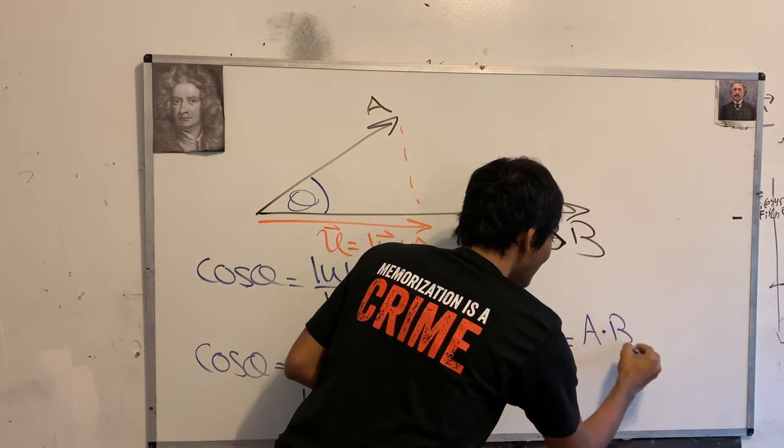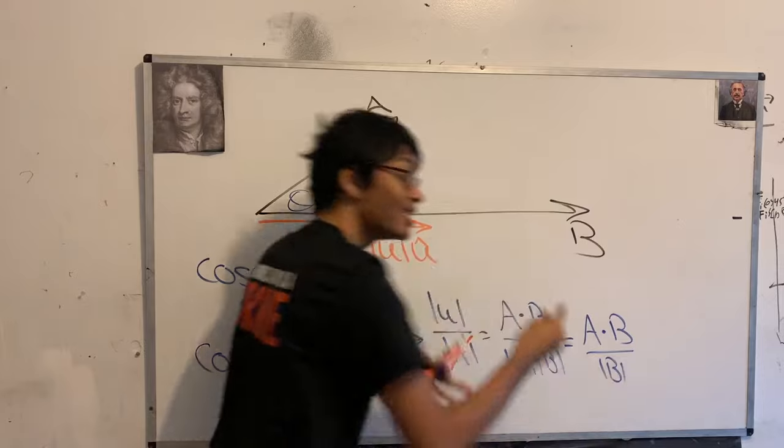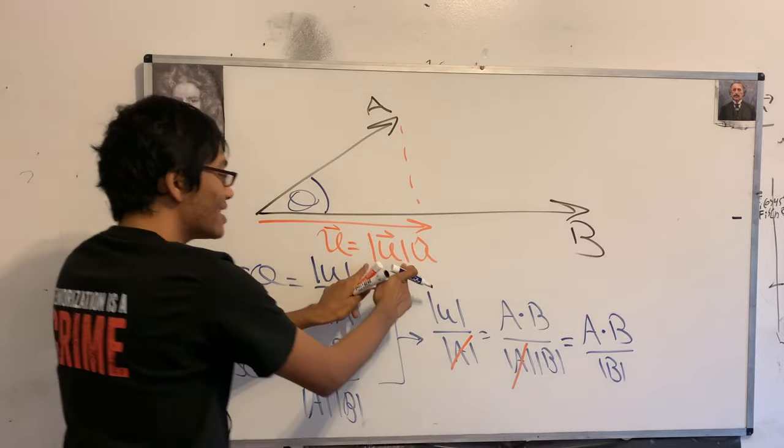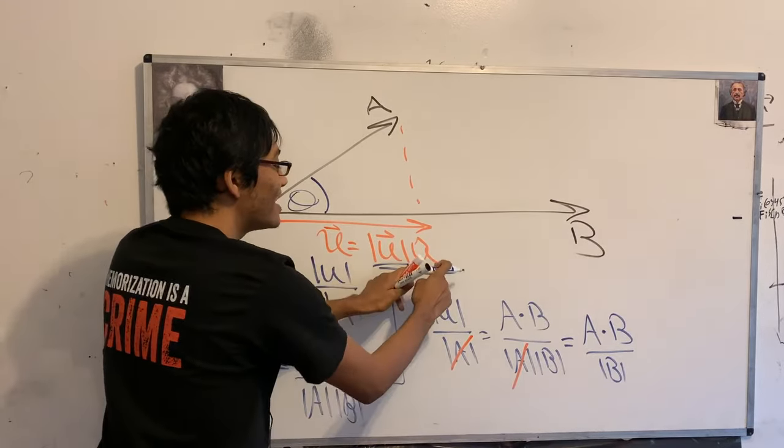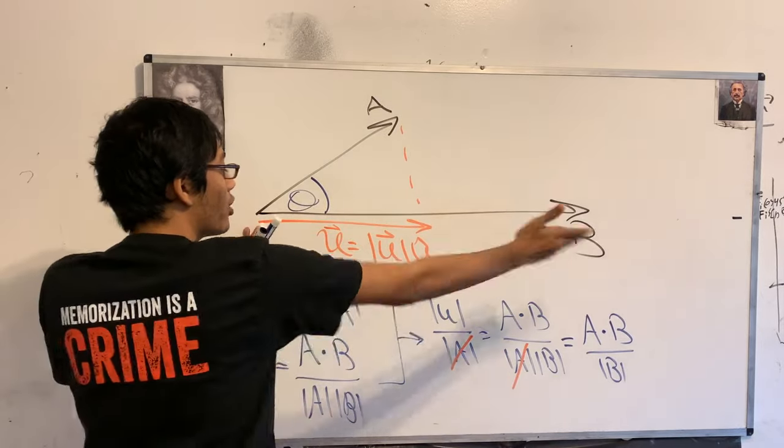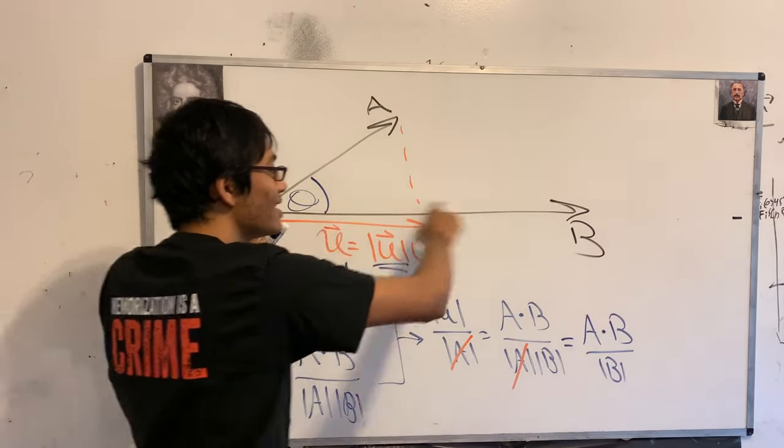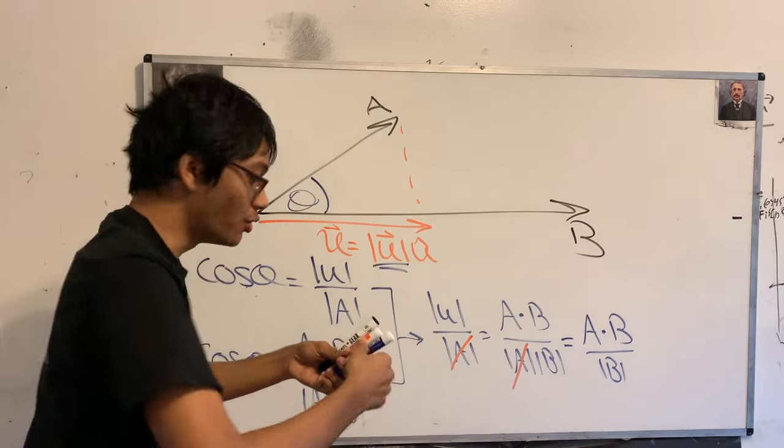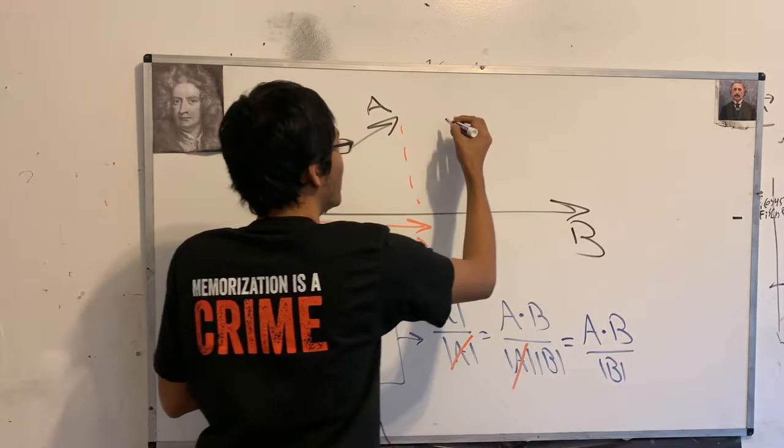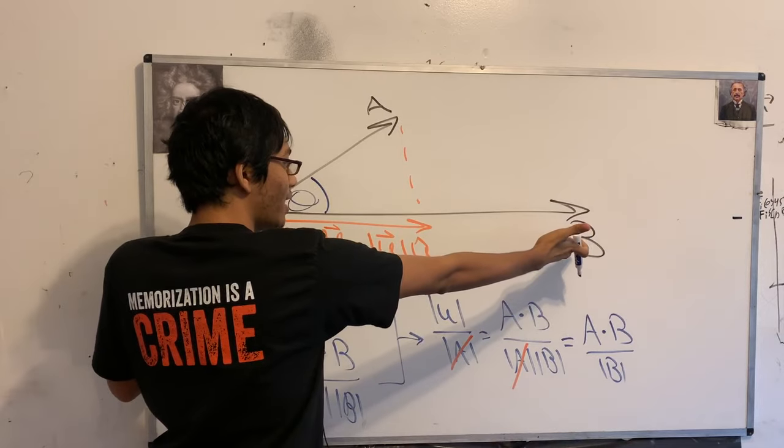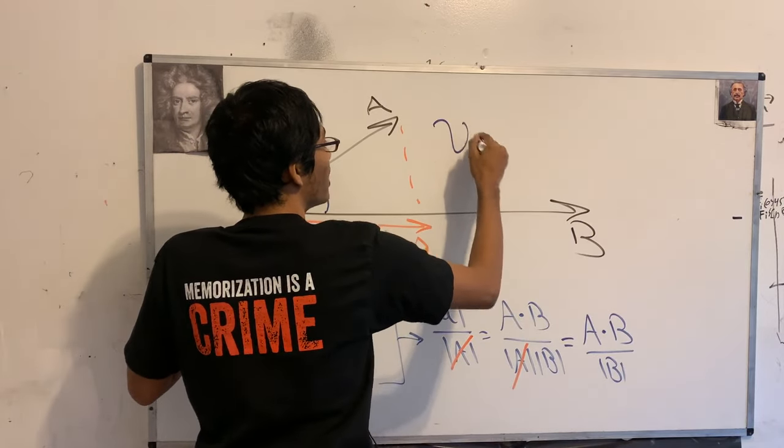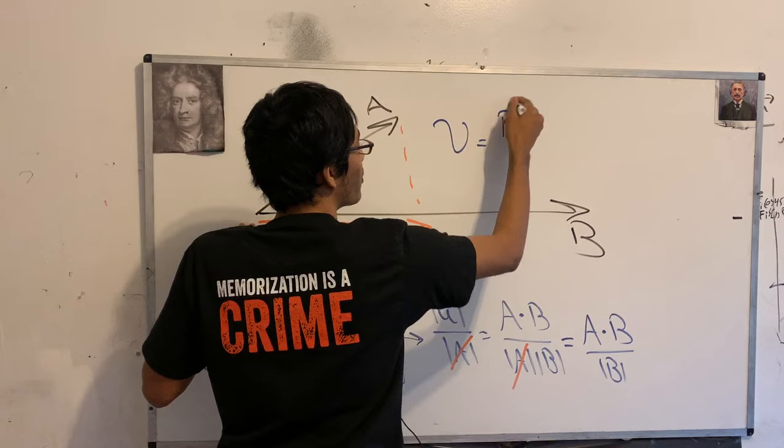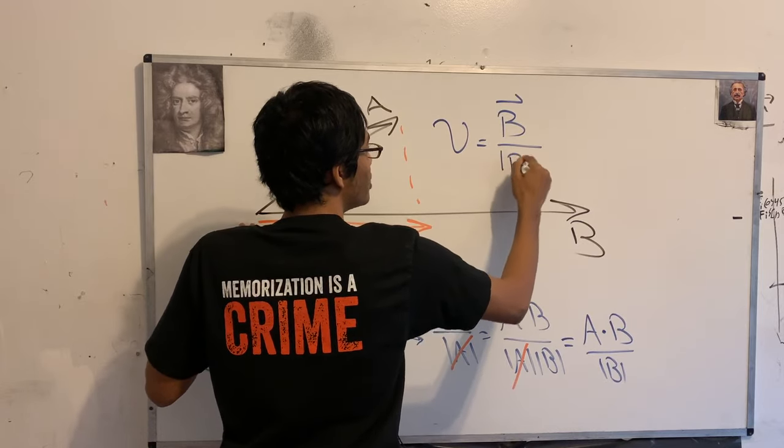But we still need the direction. We have the magnitude, but we still need the direction. Now, notice the direction of our projection is going to be in the same direction as this vector B that we're projecting onto. And what's the direction of vector B? Well, it's going to be the unit vector. What's the unit vector for B? Well, it's going to be B itself over the magnitude of B.